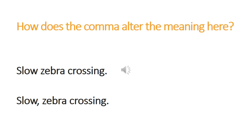Have a look at this next example. Can you explain how the comma changes the meaning? You could either explain this in your books or you could draw a picture to show how the meaning is changed despite or because of the comma. For the first one, it sounds like a slow zebra is crossing the road. Whereas, where the comma is, it's helping you to read it in a clearer way, saying 'slow, zebra crossing coming up.' Can you see the difference there?